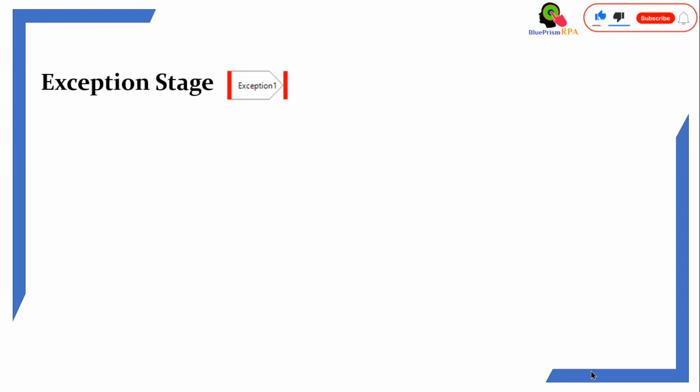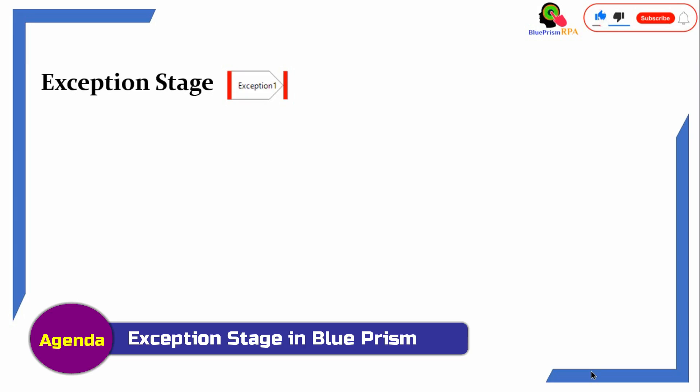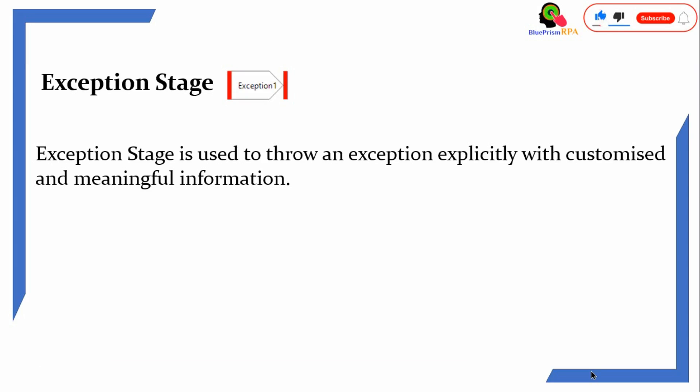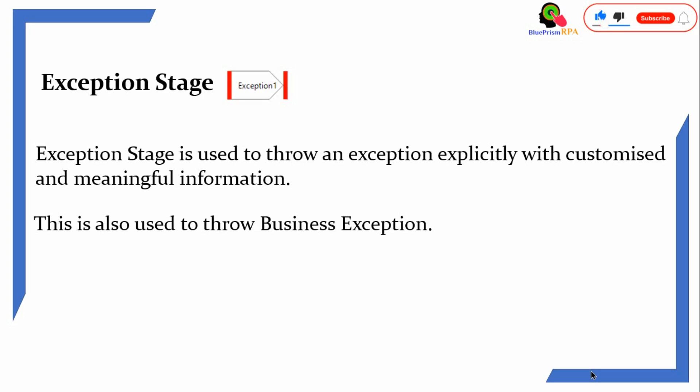In the previous video we talked about what is exception and what is exception handling. Now in this video we'll talk about exception stage. Exception stage is used to throw an exception explicitly with customized and meaningful information. You can even use this exception stage to re-throw an exception. Exception stage is also used to throw business exceptions. You can use it anywhere in your Object Studio and Process Studio.